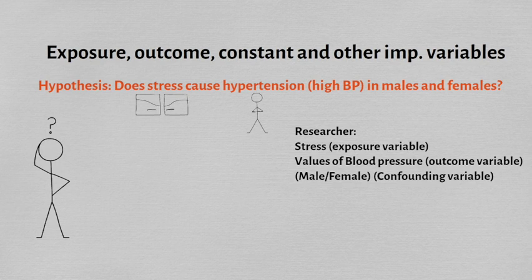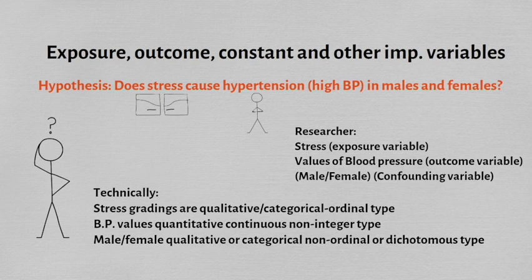Gender is a confounding variable. Technically, stress is a qualitative or categorical type of variable that has certain readings of severity, so it is also called ordinal. Blood pressure, on the other hand, is a quantitative type of variable that can take many indefinite values, so it's a continuous non-integer type of variable. Male or female is a nominal variable with two distinct categories, making it dichotomous or non-ordinal.